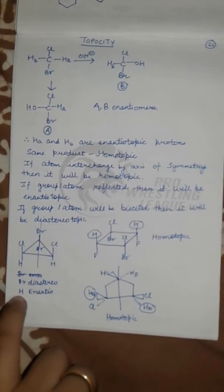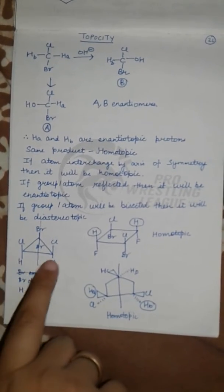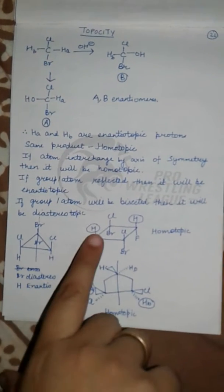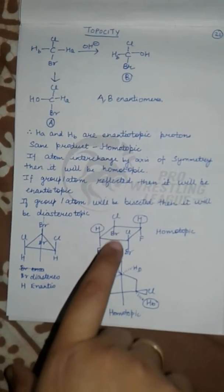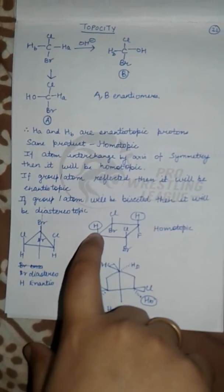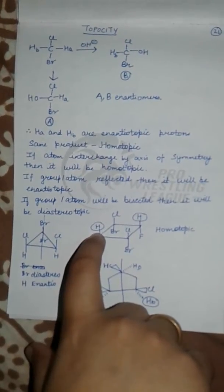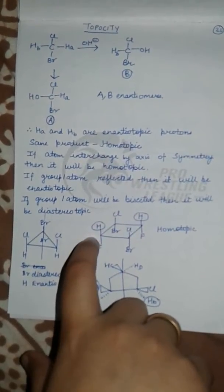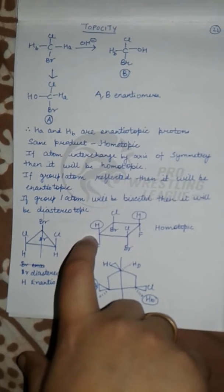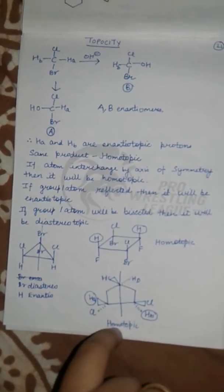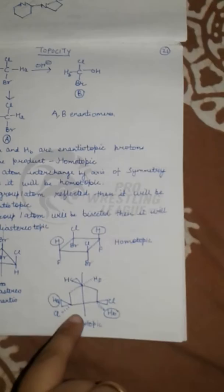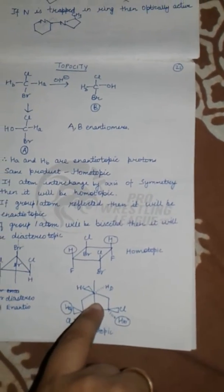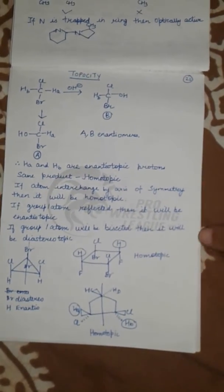And hydrogens are enantiotopic because they are reflected. In this one, when the axis is passed, the same product is forming, then it is homotopic. In this, when the axis is passed it is the same, so it is homotopic.